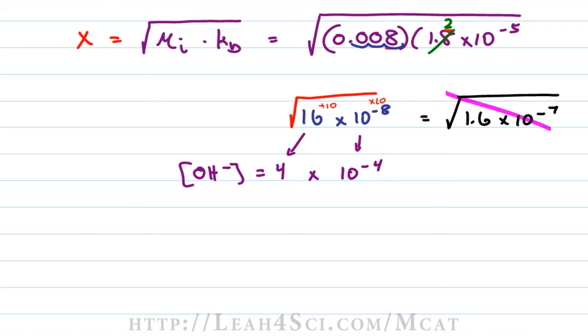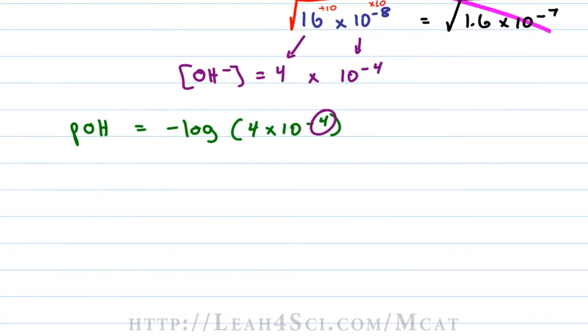And that means our OH minus concentration which is equal to x is equal to 4 times 10 to the minus 4. Now we want to use this to find the pOH which is equal to negative log of the OH minus concentration or negative log of 4 times 10 to the minus 4.